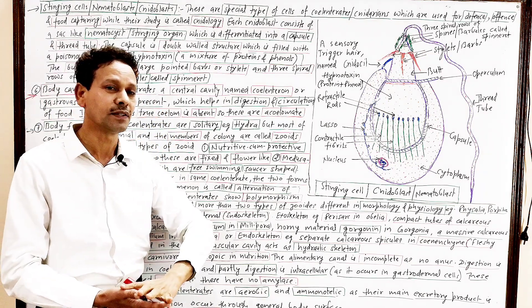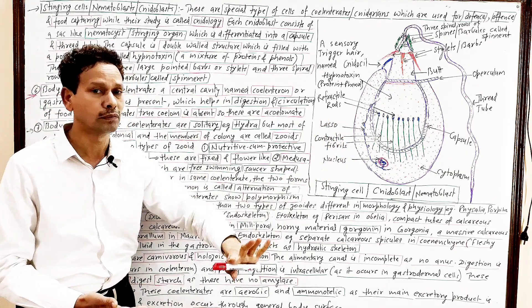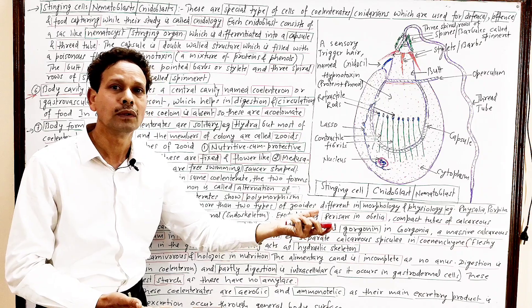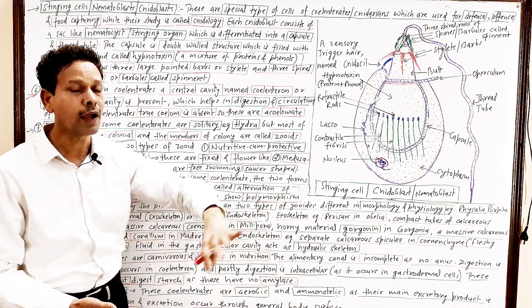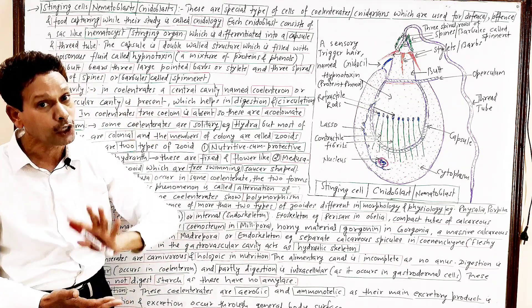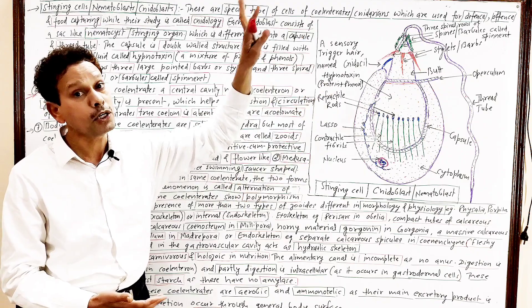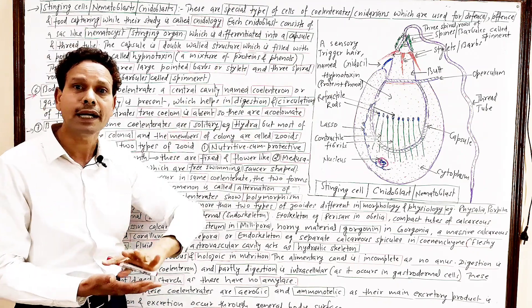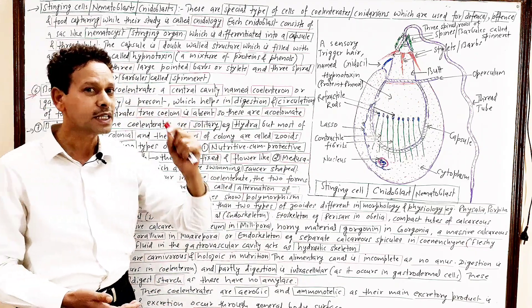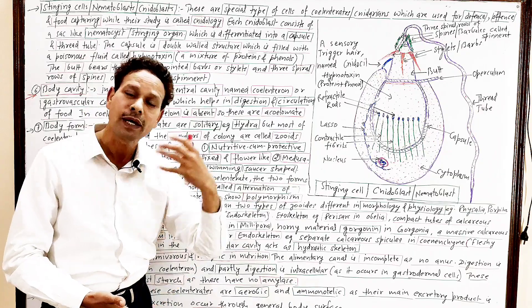In case of coelenterates, true coelom is absent. Not all compositions students, no coelom, like phylum Porifera, this phylum, these coelenterates also, is acoelomata. The main body cavity of coelenterates, that main body cavity of coelenterates is coelenteron. In case of Porifera, in case of sponges, the main body cavity was spongocoel. But in these animals, these are coelenterates, the main body cavity, coelenteron, or it is gastrovascular cavity. Because this cavity involves in digestion of food as well as also circulation of food.